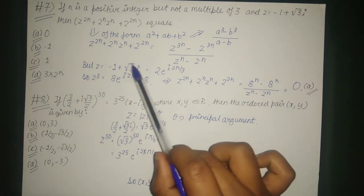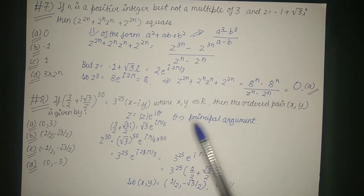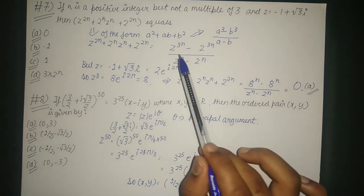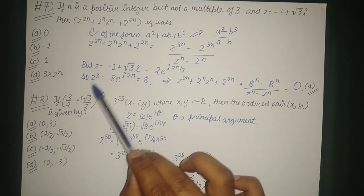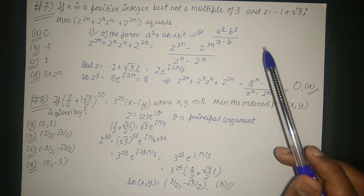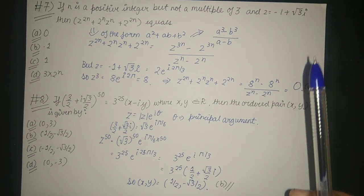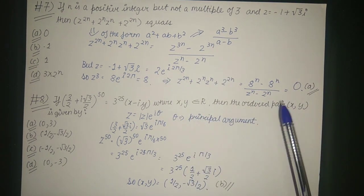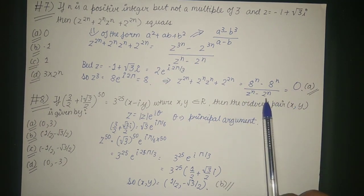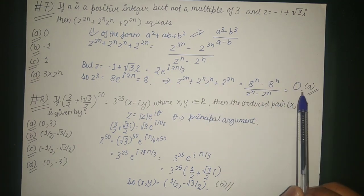Converting z = -1 + √3·i into polar form: z = |z|·e^(iθ) = 2·e^(i·2π/3). So z³ = 8·e^(i·2π) = 8, meaning z^(3n) = 8^n. The numerator becomes 8^n - 8^n = 0. Since n is not a multiple of 3, the denominator is not zero. Therefore the expression equals 0, and the correct answer is option A.